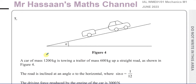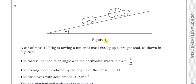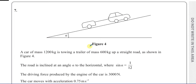This question: we have a car of mass 1200 kilograms towing a trailer of mass 600 kilograms up a straight road, as shown in figure 4. The road is inclined at an angle of alpha to the horizontal, where sine of alpha equals 1 over 12. The driving force produced by the engine of the car is 3000 newtons. The car moves with acceleration 0.75 meters per second squared.